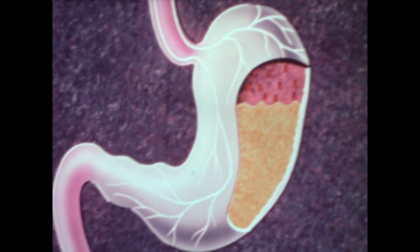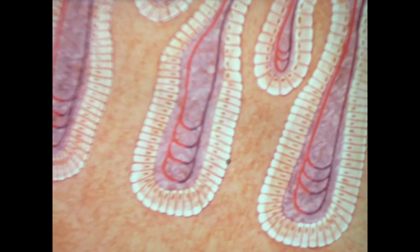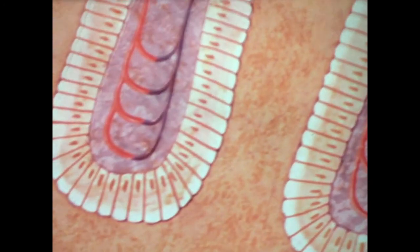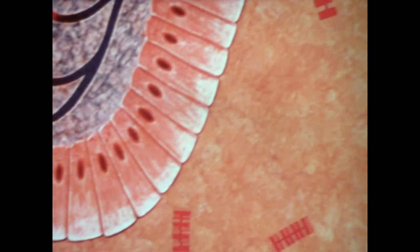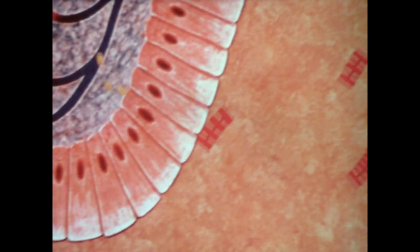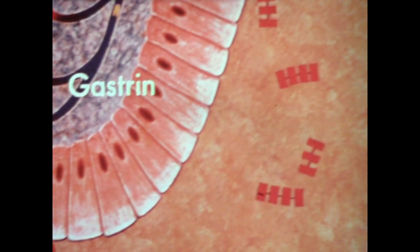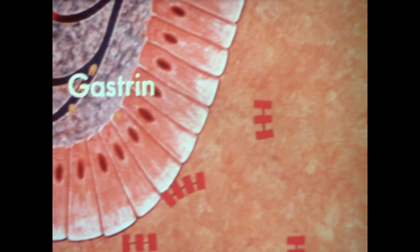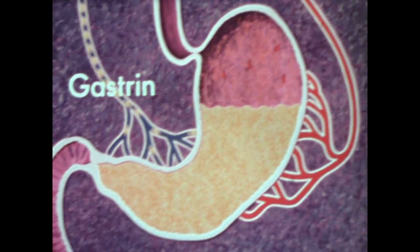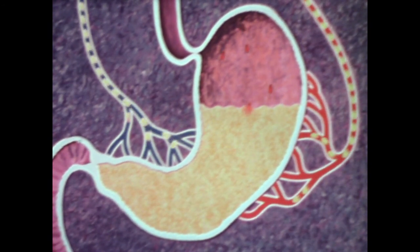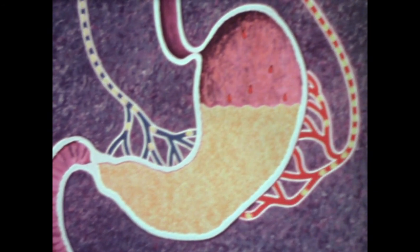But the secretion of gastric juice is also controlled by another mechanism. In the lower region of the stomach, some foods, particularly the digestion products of protein, stimulate cells in the stomach lining, releasing a hormone called gastrin. This hormone, carried by the blood to the gastric glands, also increases the flow of gastric juice.